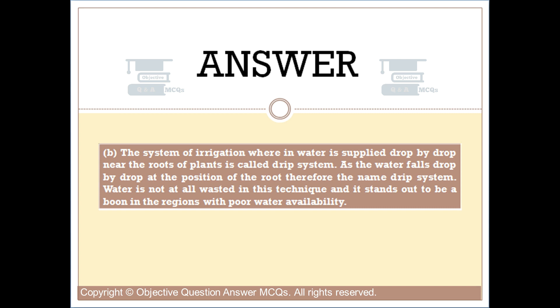As water falls drop by drop at the position of the root, it is called the drip system. Water is not wasted at all in this technique, and it stands out to be a boon in regions with poor water availability.